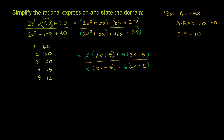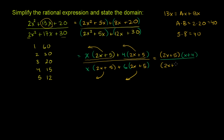Now we can factor out (2x + 5) from both groups. The numerator becomes (2x + 5)(x + 4), and the denominator becomes (2x + 5)(x + 6). You might be tempted to immediately cancel the (2x + 5) factors, but we have to be very careful — we first need to think about the domain. If we simplify without considering the domain, we might include values not in the original expression's domain, effectively changing the function.